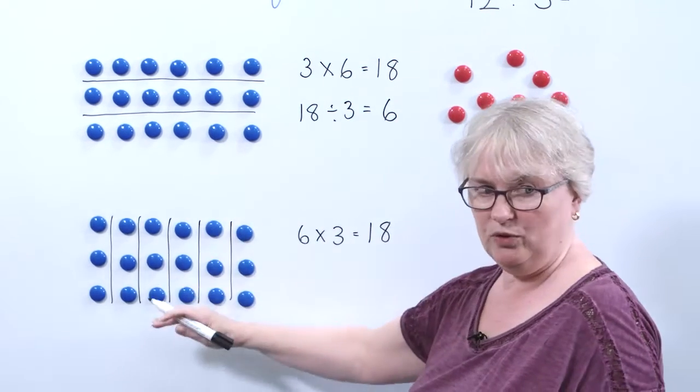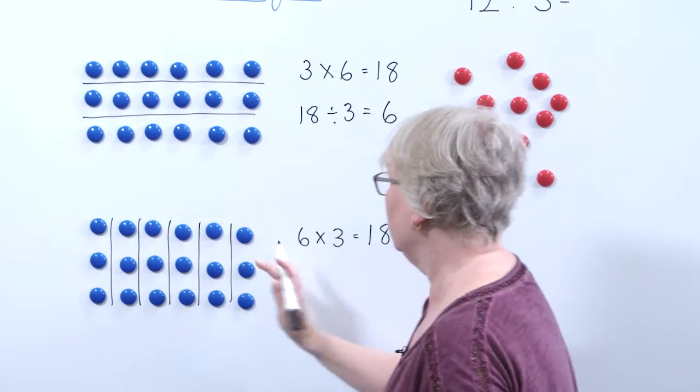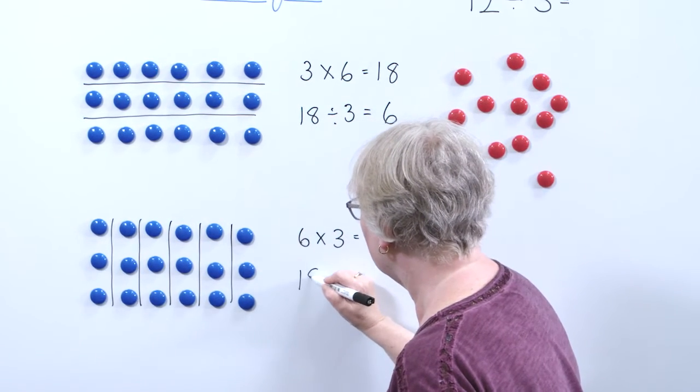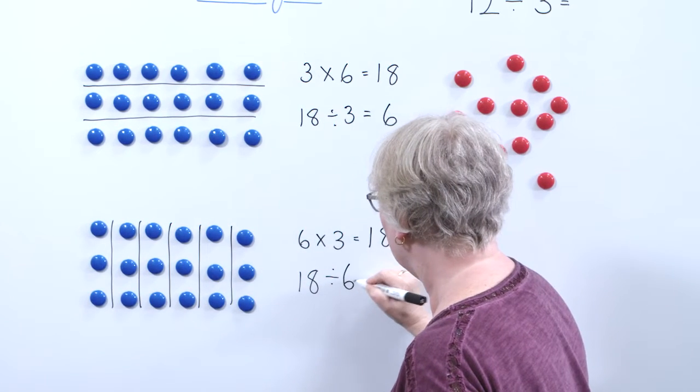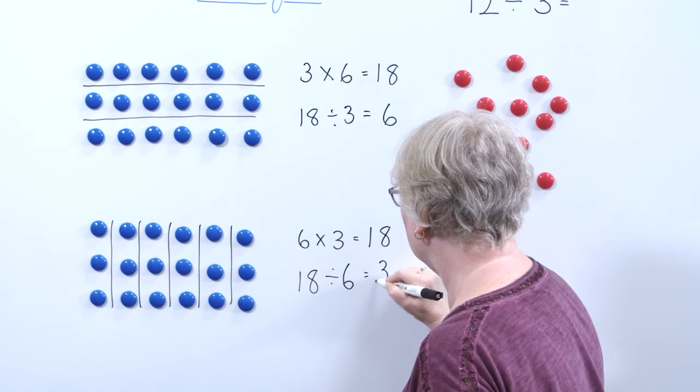Looking at the bottom one, looking at the columns I can see I started with 18 counters. I have divided them by six columns and I've got three in each column.